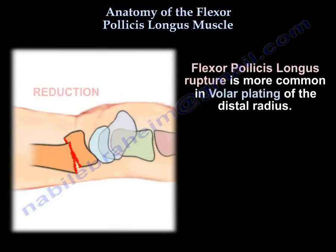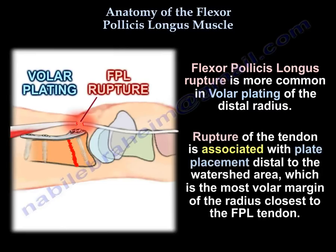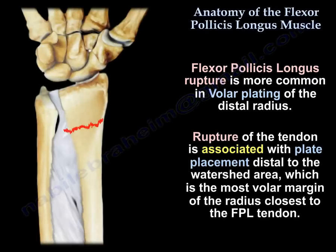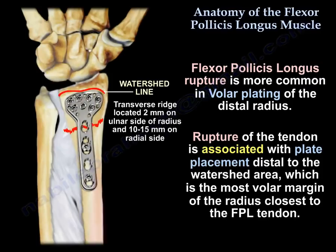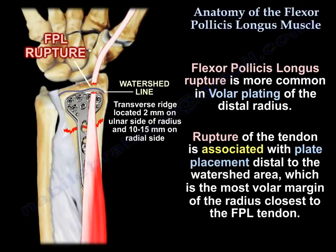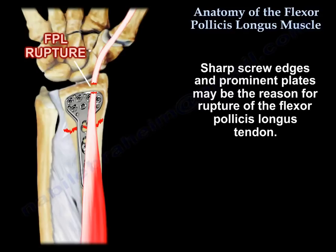The flexor pollicis longus rupture is more common in volar plating of the distal radius. It is associated with plate placement distal to the watershed area, which is the most volar margin of the radius closest to the flexor tendon. Sharp screw edges and prominent plates may be the reason for the rupture of the flexor pollicis longus.